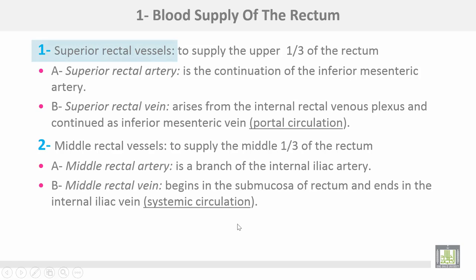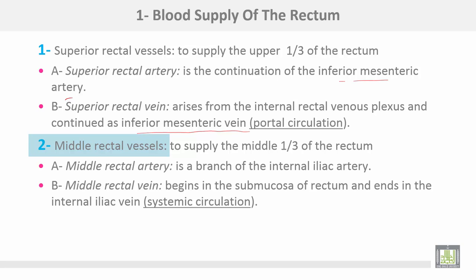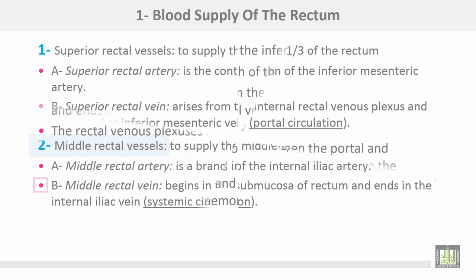Blood supply of the rectum: the superior rectal vessels supply the upper third of the rectum. The superior rectal artery is the continuation of the inferior mesenteric artery. The superior rectal vein arises from the internal rectal venous plexus and continues as the inferior mesenteric vein, forming part of the portal circulation. The middle rectal vessels supply the middle third. The middle rectal artery is a branch of the internal iliac artery. The middle rectal vein begins in the submucosa and ends in the internal iliac vein as systemic circulation.